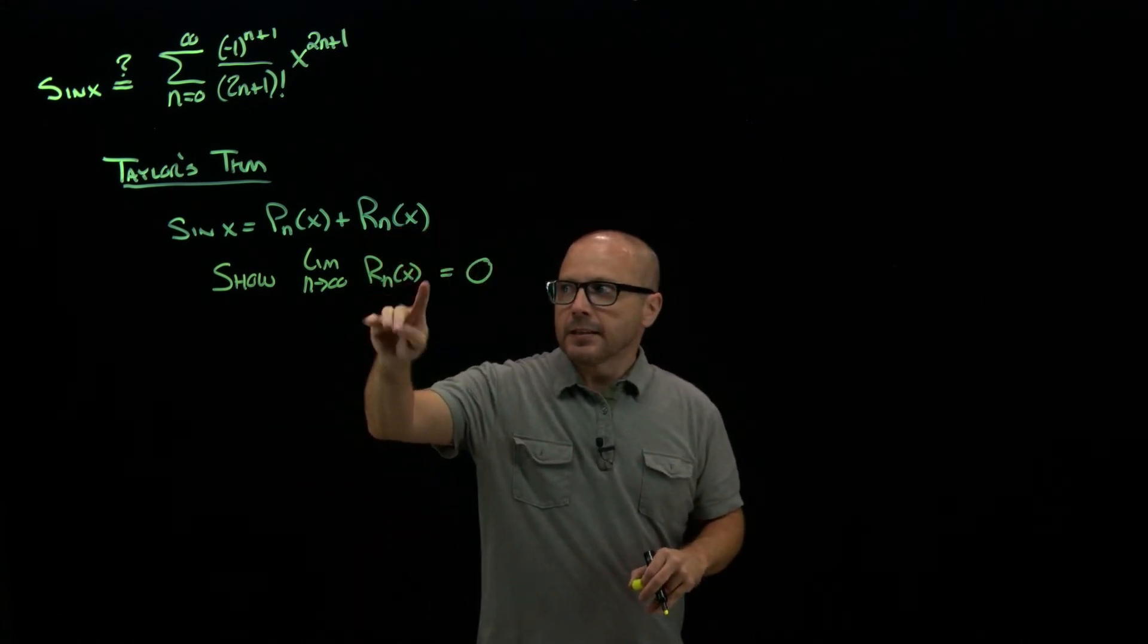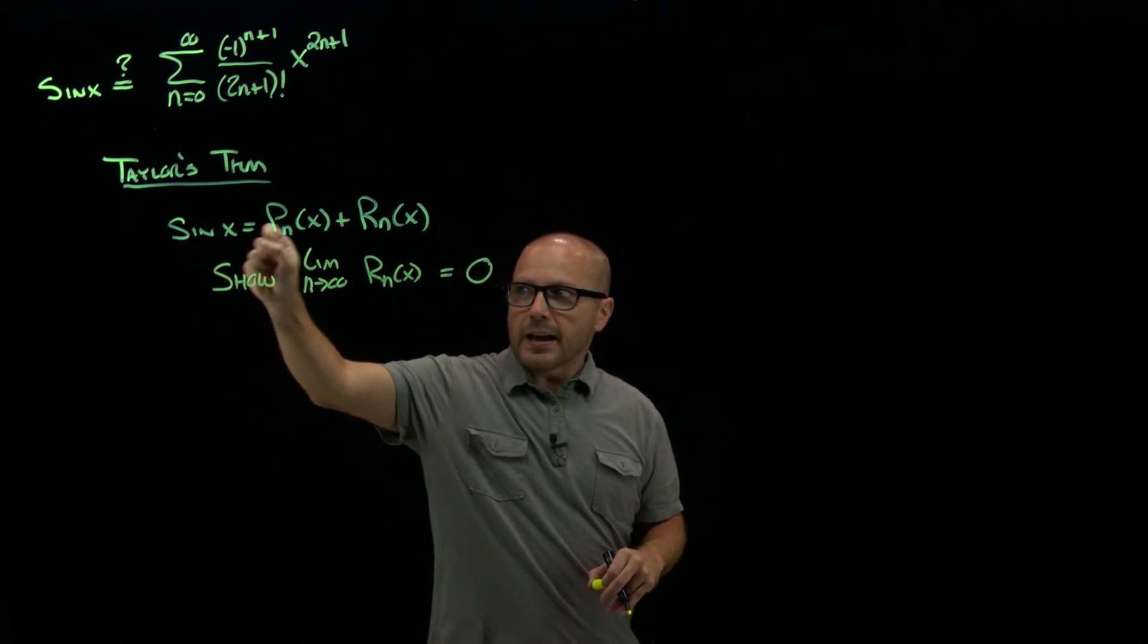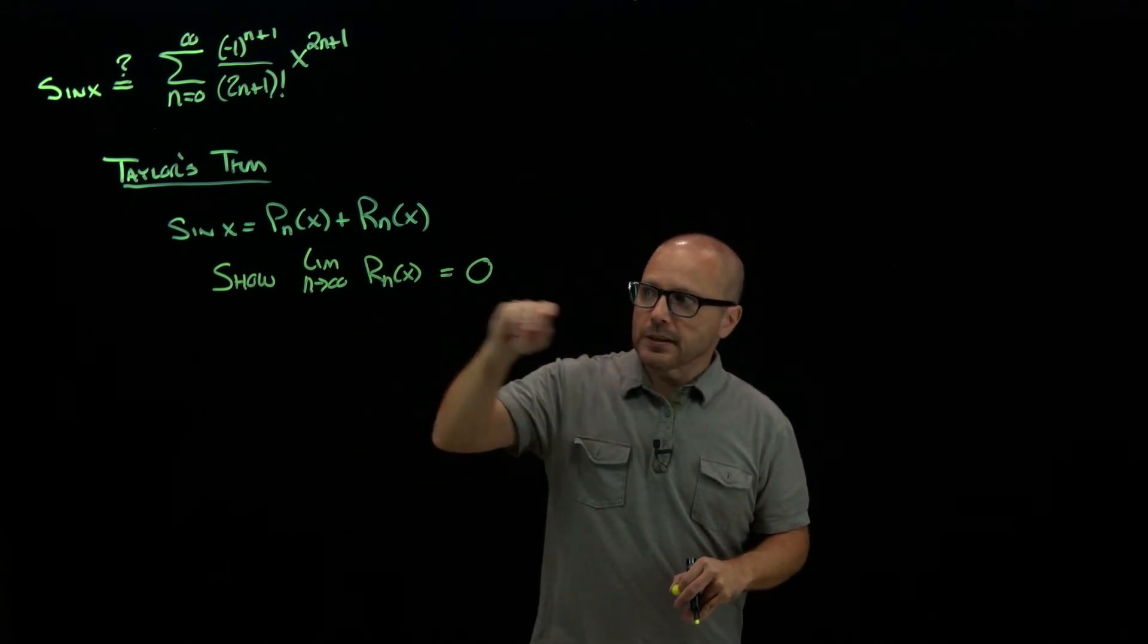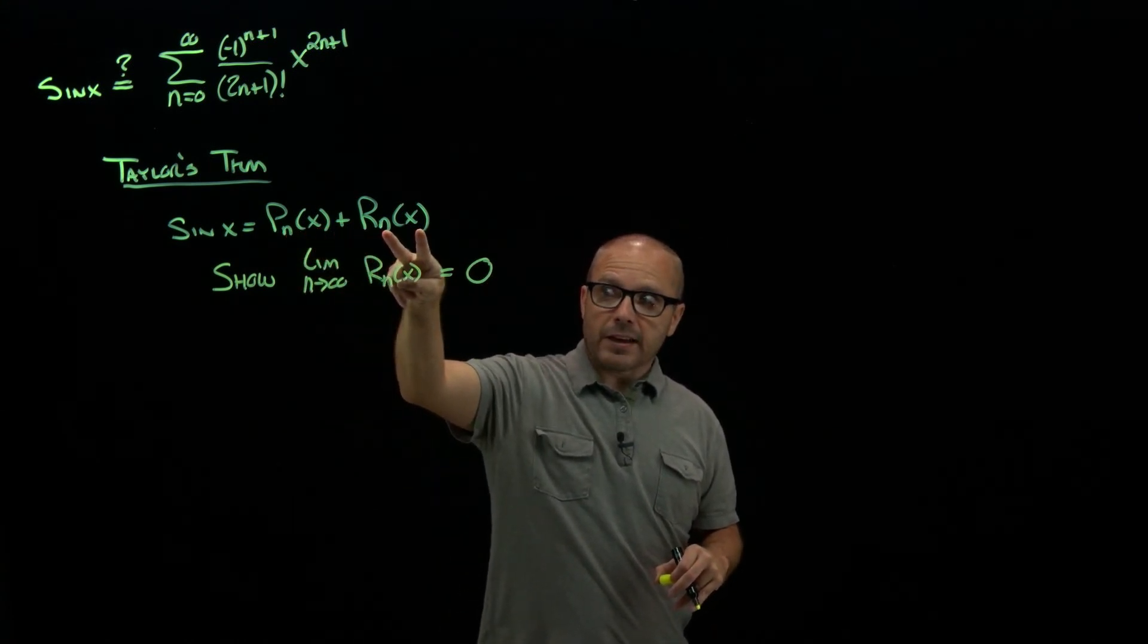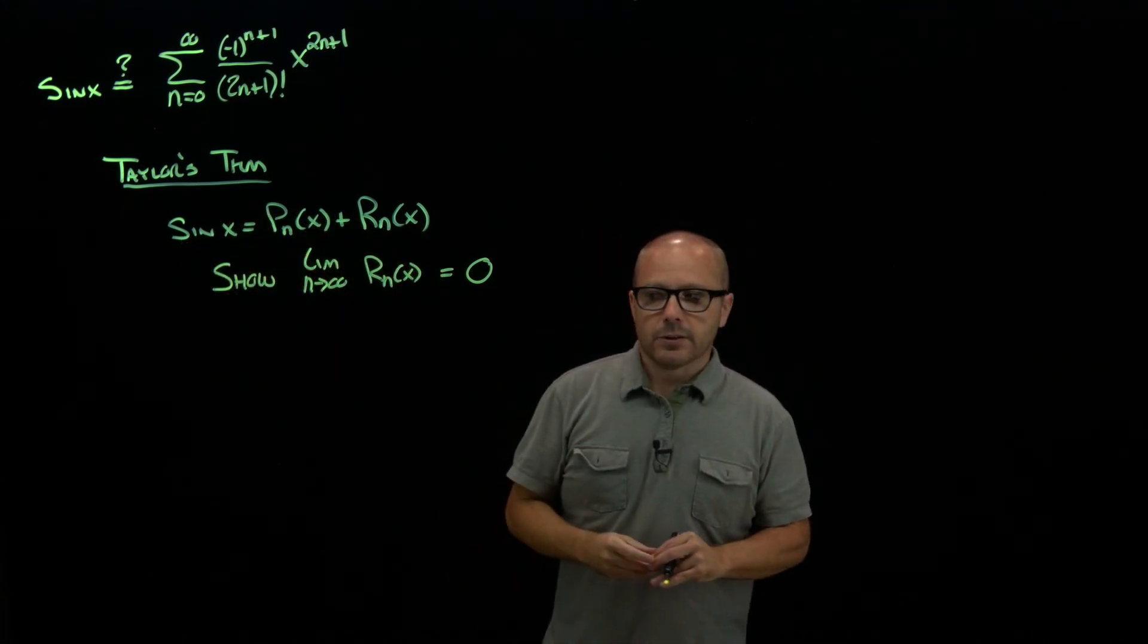If we can show this, then we'll have shown that sine x is equal to its Taylor series, because as you go to infinity, the polynomial becomes the series, and if that goes to zero, the function is the series.